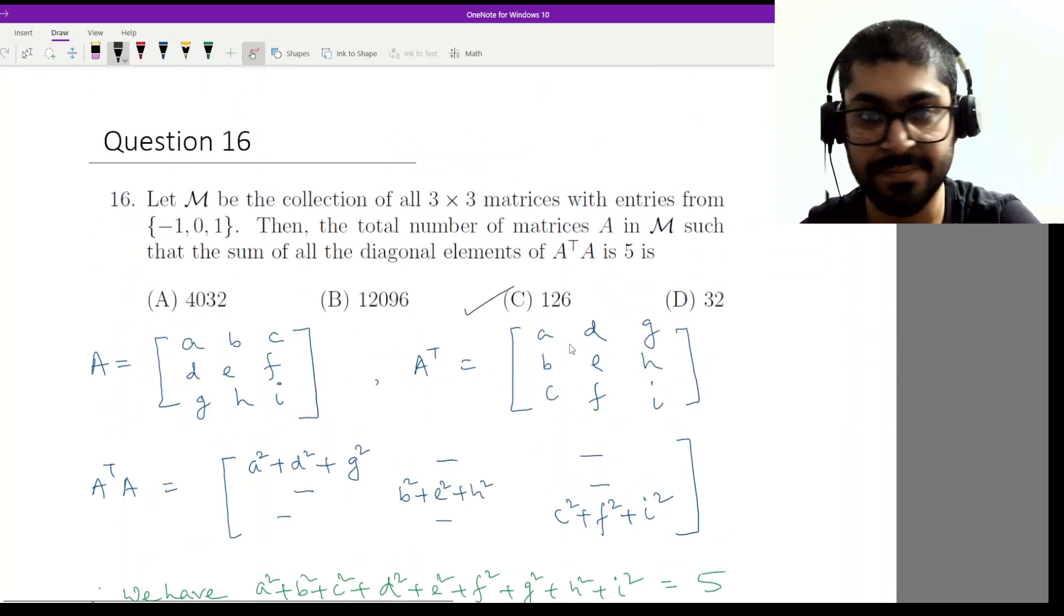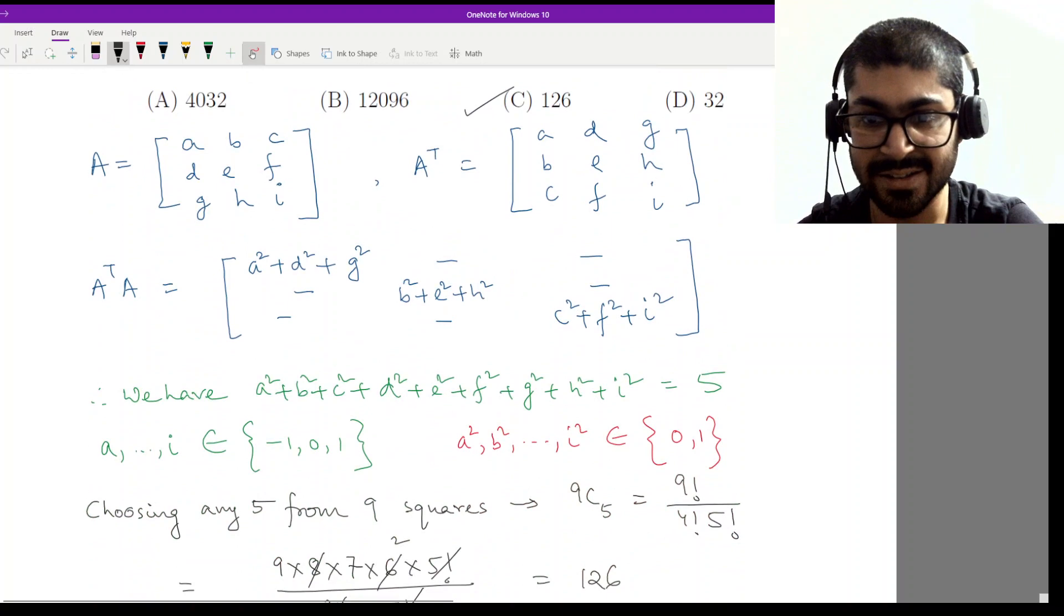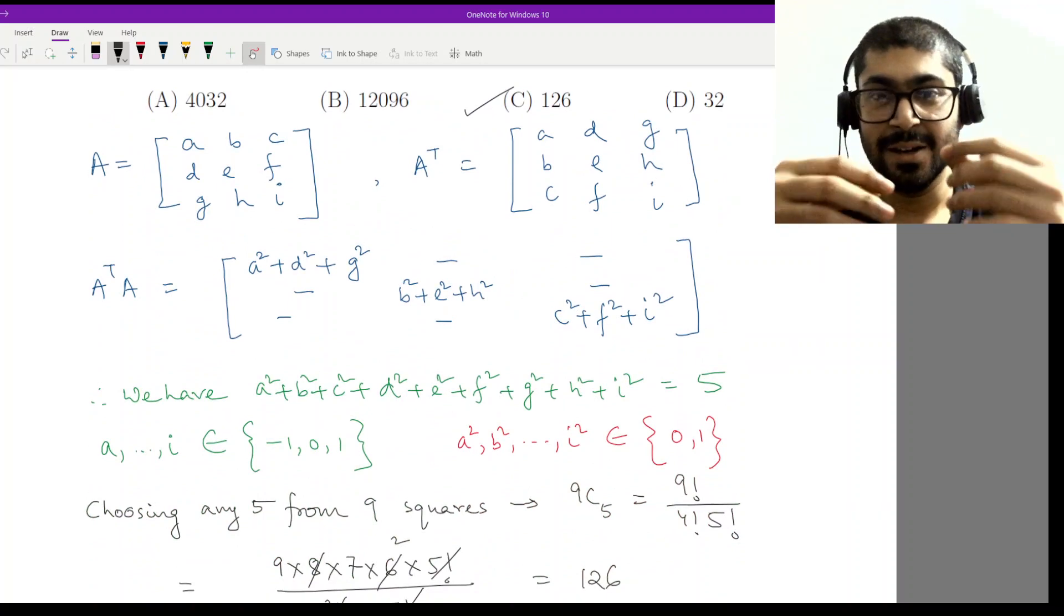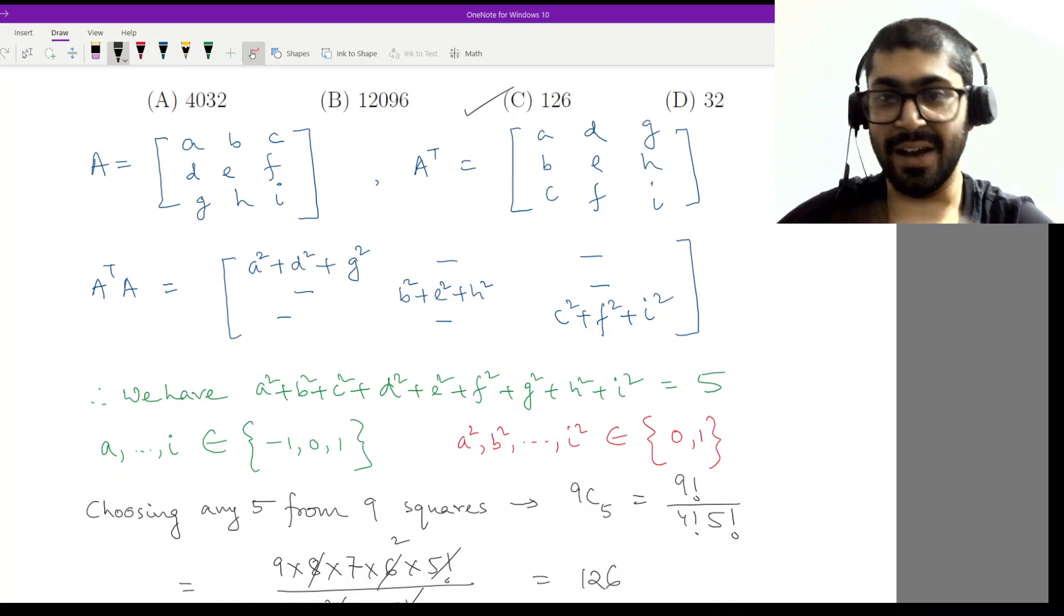This is option C. This sum was a bit of a mixture between linear algebra, permutation combination, as well as the concept of squares.